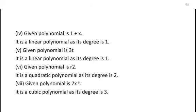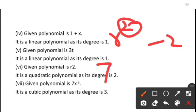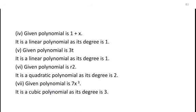In the case of r², the degree is 2, therefore it is a quadratic polynomial. In the case of 7x³, the degree is 3, therefore it is cubic. So according to the highest degree of the polynomial, it is decided whether it is linear, quadratic, or cubic. We have to look at questions carefully and thoroughly so that we can answer correctly.